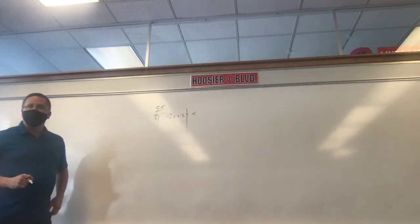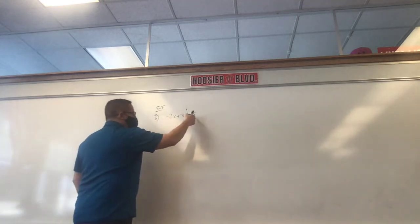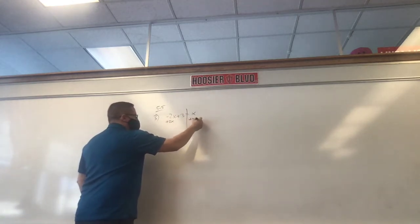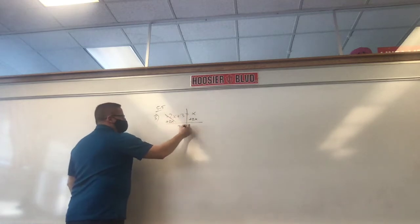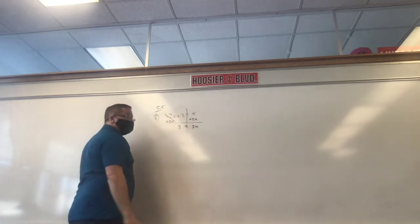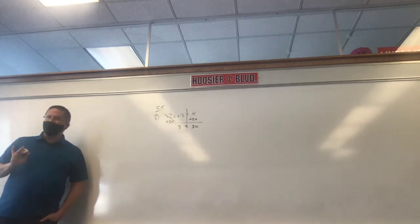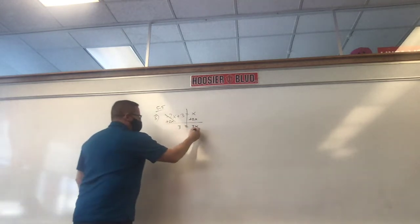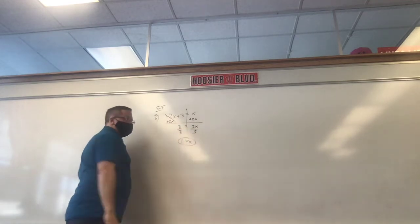Which one do I tell you to get rid of? The smaller one. Which one's smaller? Negative 2x. So we add 2x, add 2x. These cancel. 3 equals 3x. Are we done? Divide by 3. We divide by 3 and we get x equals 1.